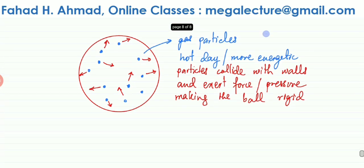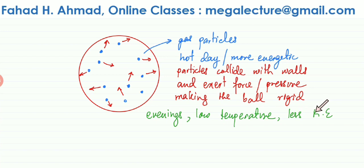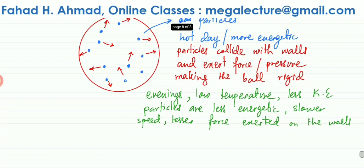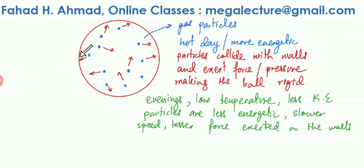In the evening the temperature is lower, so the particles have less kinetic energy. They are not randomly moving around as fast and the force at which they collide with the walls is not very large. These less energetic particles move slower, exert a lesser force on the walls when they collide, so lesser pressure is exerted on the walls of the football.